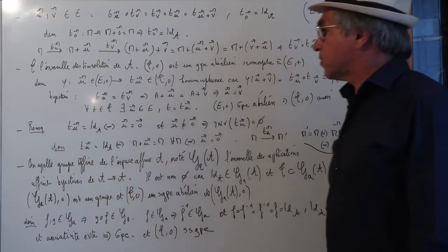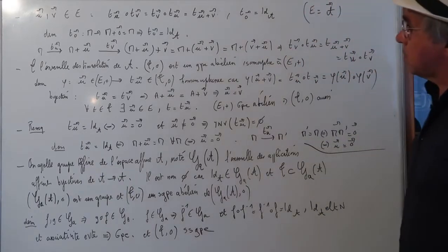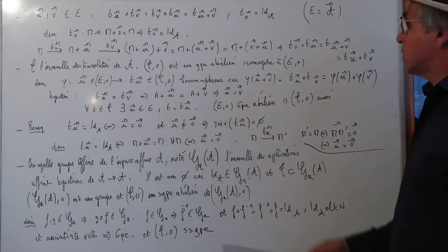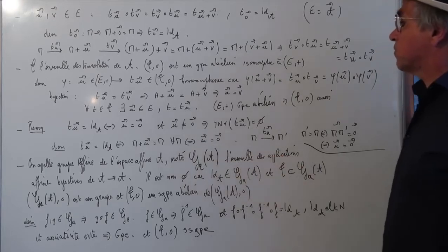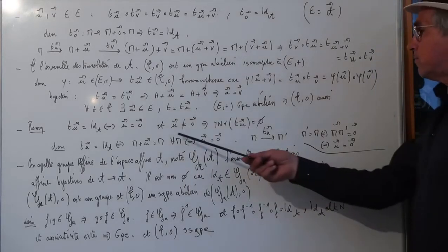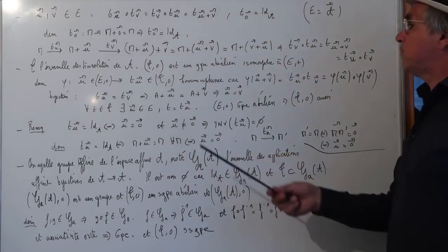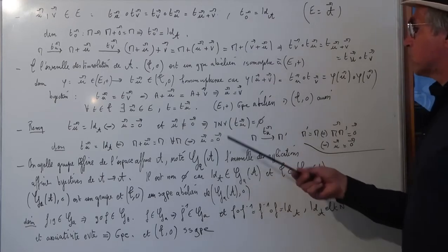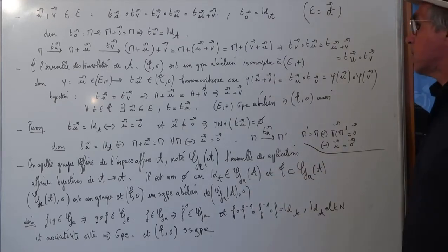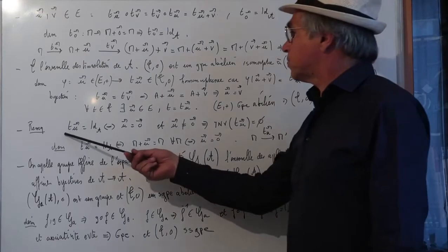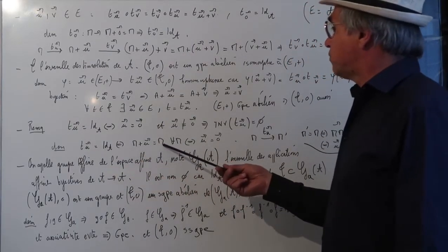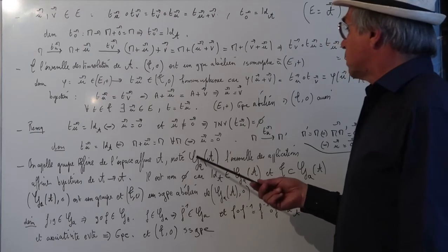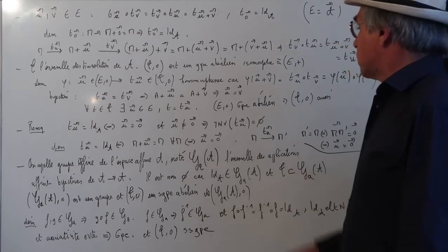Remarque : la translation de vecteur U est l'identité si et seulement si U est le vecteur nul. Et si U est différent du vecteur nul, l'ensemble des invariants de la translation est vide. En effet, T_U = identité équivaut à M + U = M pour tout M, ce qui équivaut à U = 0.